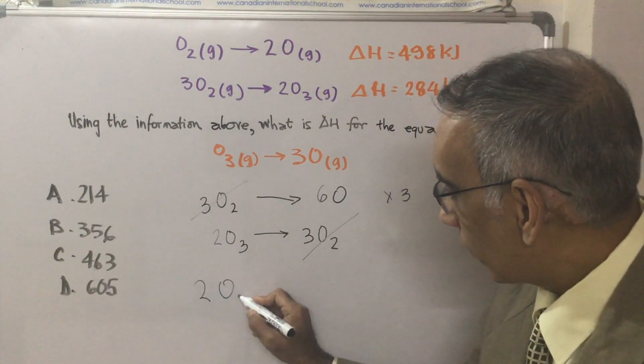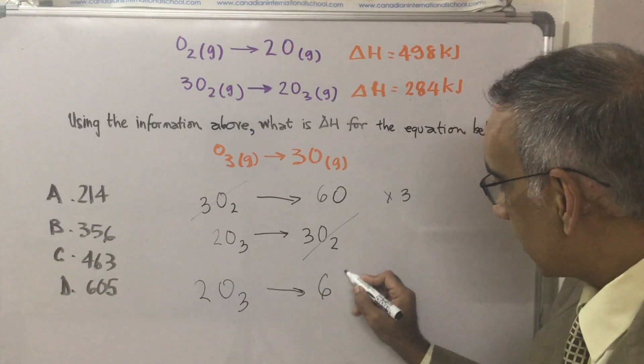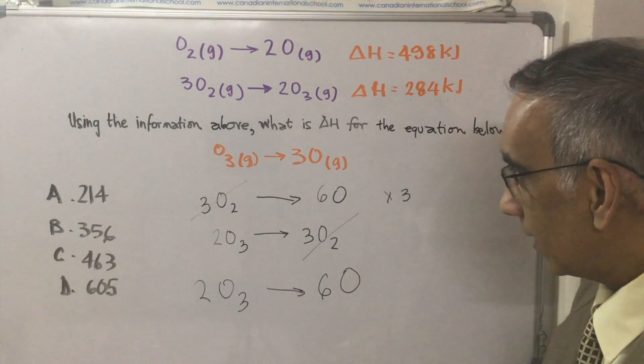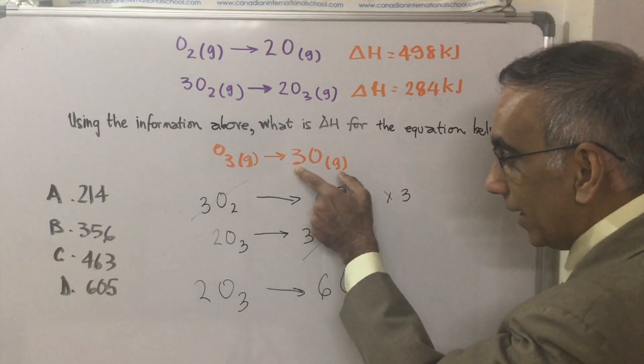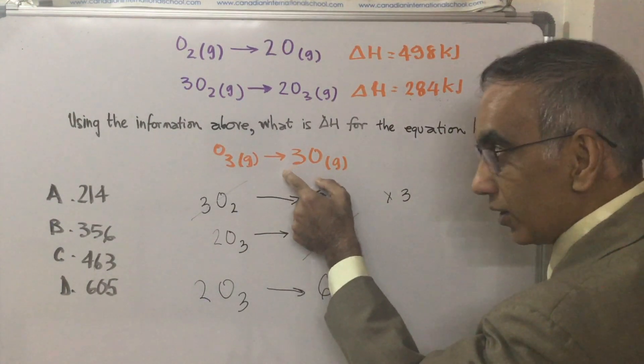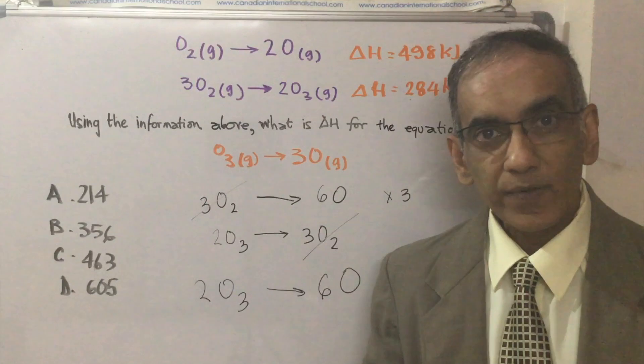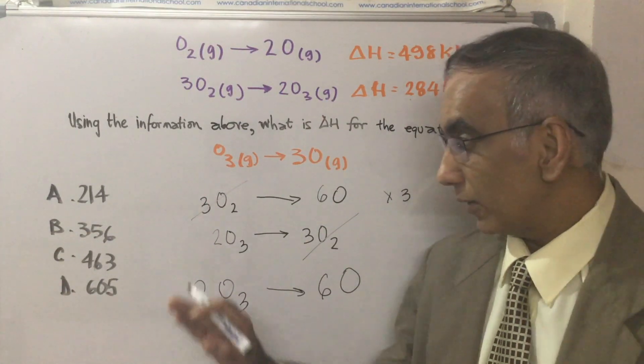Two O₃, which is left here, gives six O. And that is very much in line with this. But if you notice, this is twice as much as this. So we've arrived at the answer. Now we just need to do some maths to arrive at the final number.